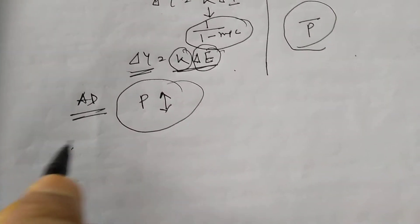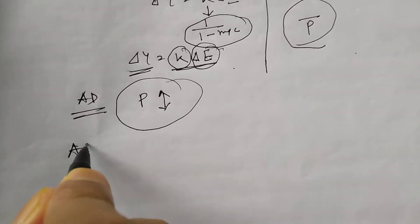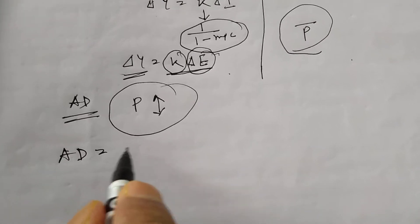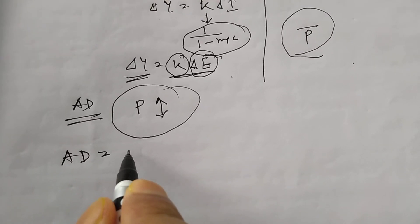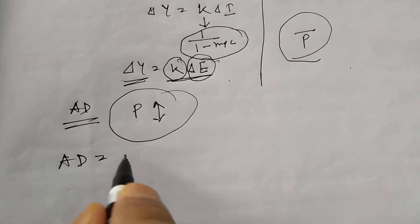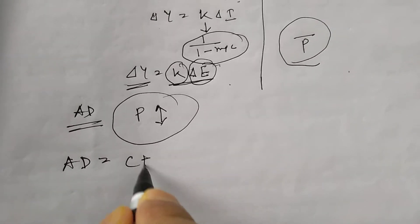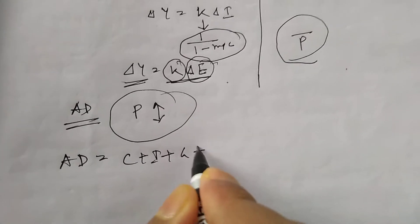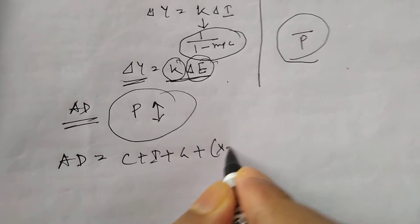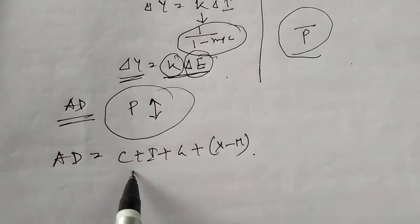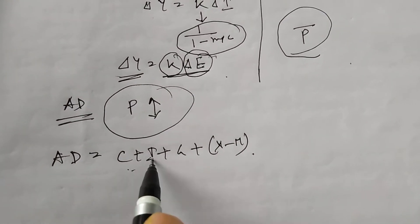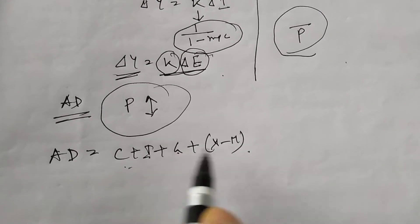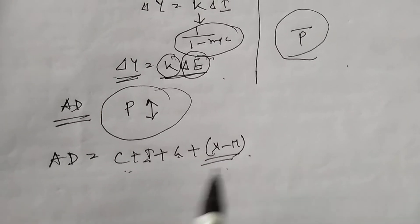Before discussing those two cases, let's recall the components of aggregate demand at constant prices. Aggregate demand expenditure equals C plus I plus G plus X minus M: C is consumption expenditure, I is investment expenditure, G is government expenditure, and X minus M is net exports.